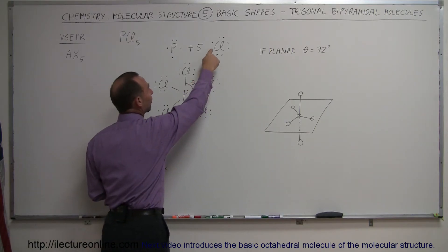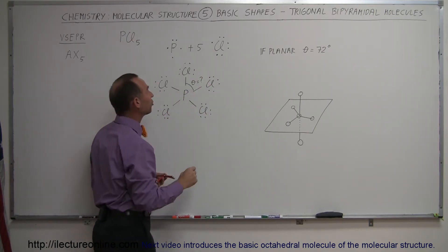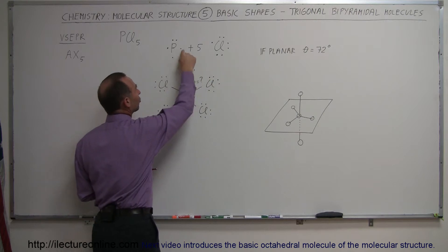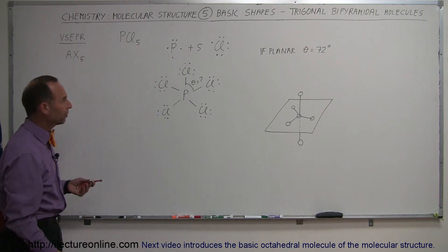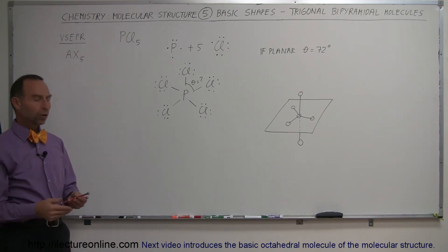Each of the chlorine atoms would like to have one additional electron to fill its valence shell, so it's going to have a sharing arrangement. In this case there's going to be five of those sharing arrangements making those five bonds, those are single bonds. Now the question is, what will that molecule look like?